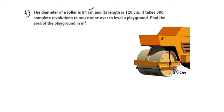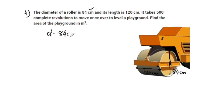The area of the playground equals 500 times the curved surface area of the roller. We use the cylinder model with formula 2πrh. The diameter D is equal to 84 cm, so the radius R equals 84 divided by 2, which is 42 cm, and the height h equals 120 cm.